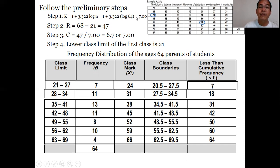Remember, the number of classes is 7. So we have 1, 2, 3, 4, 5, 6, 7 classes. When you add all the frequencies, it should equal 64. For the less than cumulative frequency, the last entry should equal 64. So that's the frequency distribution table of the ages of 64 parents of students in a certain school in Infanta.